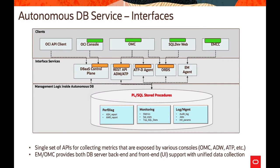Looking at the various interfaces available to Autonomous Database, we have different kinds of clients: OCI API clients, OCI Console, Oracle Management Cloud, SQL Developer Web, and Enterprise Manager Cloud Control. Enterprise Manager Cloud Control works through an EM agent. SQL Developer and OMC connect with ORDS services to provide functionality, and there are REST APIs for Autonomous Data Warehouse, ATP, and ATP Dedicated.